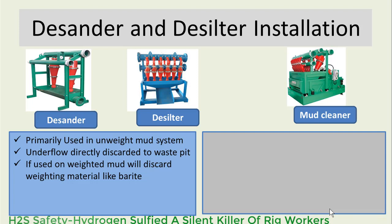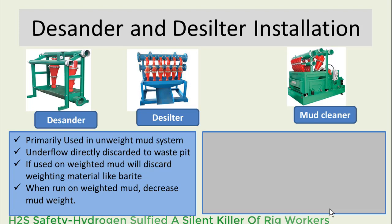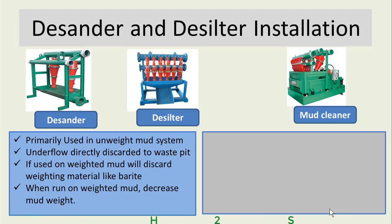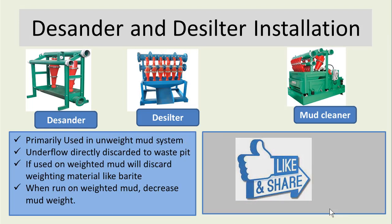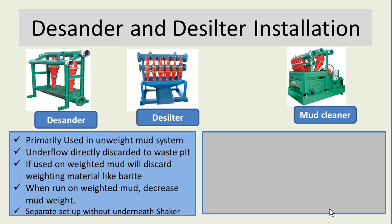When run on weighted mud, it will decrease the mud weight because they will remove barite, which is the weighting material of the mud. So definitely the mud weight will decrease. Desander and desilter in a separate setup do not have any shale shaker underneath.